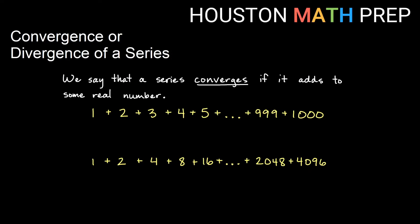We say that a series converges if it adds to some real number. So here if I'm adding the numbers from 1 to 1,000, whether I'm doing that on a calculator or using a formula that I've learned, I'm going to get some answer at the end. I'm going to say that my sum converges to that number.